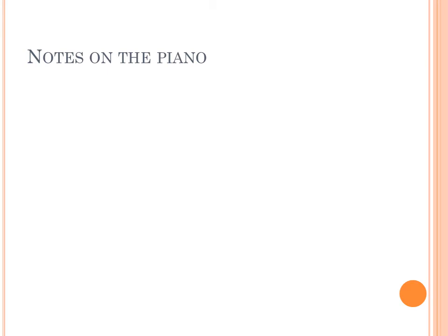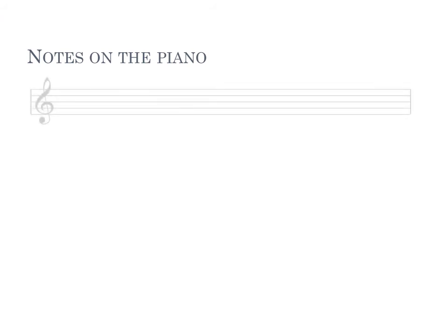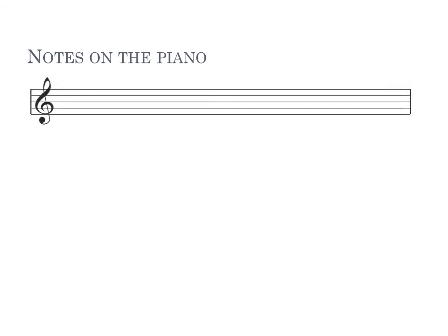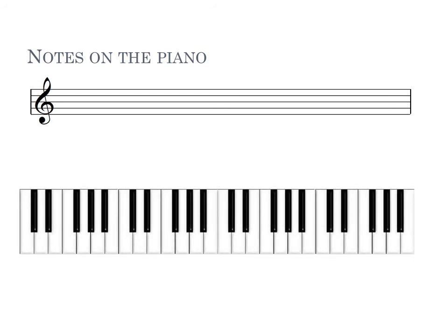We will now look at how to connect the notes to the piano. Now that we've found where they are on the staff, how to write them, and how they're organized with note names, we will look at where to find these on the piano so we can start listening to what they sound like and start creating things with them. We'll look at the treble staff and connect it to the piano keys.